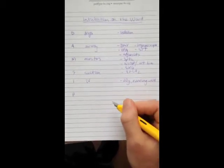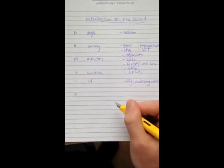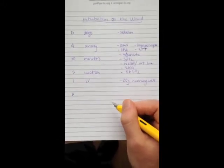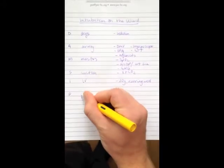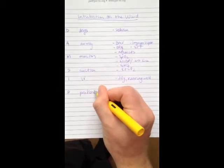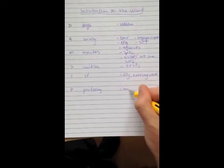And then lastly, and this is one that people don't often think about, but it's really important for intubating anyone, whether it's in a controlled environment or in an emergent setting on the ward. You need to be concerned about positioning. This means you've got to get the patient in a sniffing position.